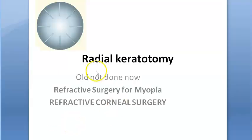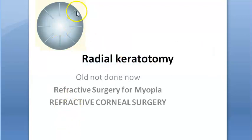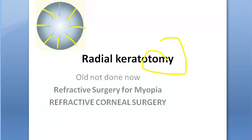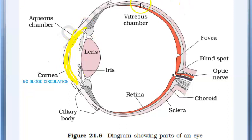In this video let us look at radial keratotomy. Kerato refers to the cornea, and radial indicates radial cuts in the cornea. The cornea is the anterior-most portion of the eye. It is avascular - it doesn't have any blood supply - so it is transparent.